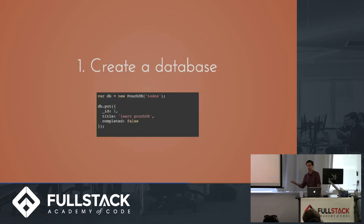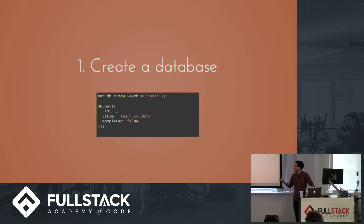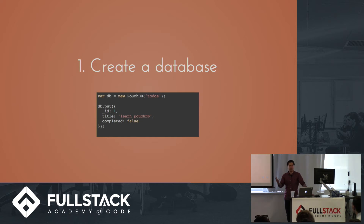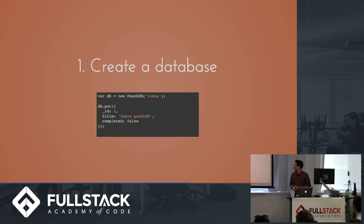Now I'm going to show you some code. Setting this up is very simple — just three steps. The first step is creating a database, which is literally one line, and you can start putting data documents into your database. Since it's a NoSQL database, you can use plain JSON objects, no schema needed, and store them into the database.